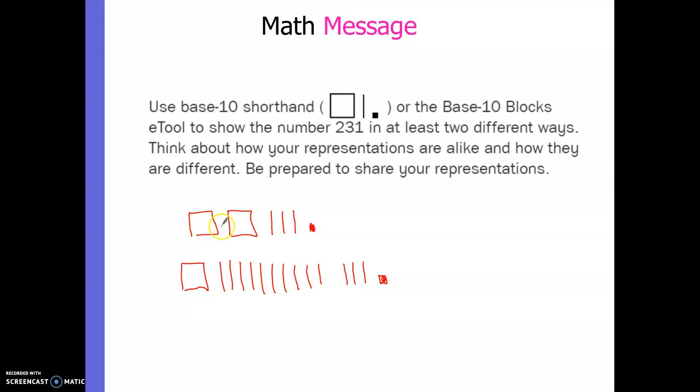Okay, so what I want you to do is show 231 in two different ways on your whiteboard. You can use these symbols here. I'm going to pause the video, give you some time to show me 231 two different ways, and then we'll come back. All right, did you get your representations done for 231? Here's mine. I drew two hundreds blocks, so that's 100, 200, then three 10 sticks, or three longs. So 200, 210, 220, 230, and one one square. So 231. That's one way.